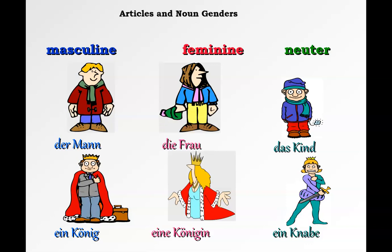'Der Mann' (man), 'die Frau' (woman), 'das Kind' (child). 'Ein König' (a king), 'eine Königin' (a queen), 'ein Knabe' (a knave, or prince).